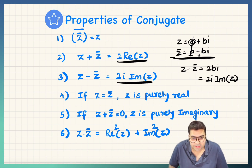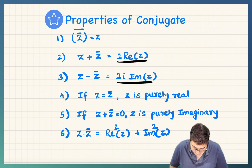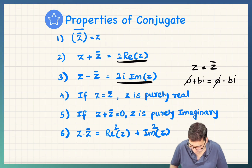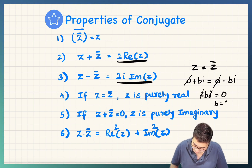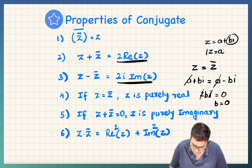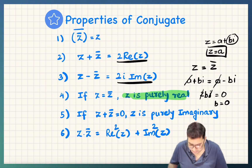If z equals z-bar, then z is purely real. If a plus bi equals a minus bi, then a cancels from both sides, and transferring gives 2bi equals 0. Since 2 is not zero and i is not zero, b must equal 0. But z was a plus bi, and if b is zero, then z equals a, which is purely real. That is why if z equals z-bar, then z is purely real.